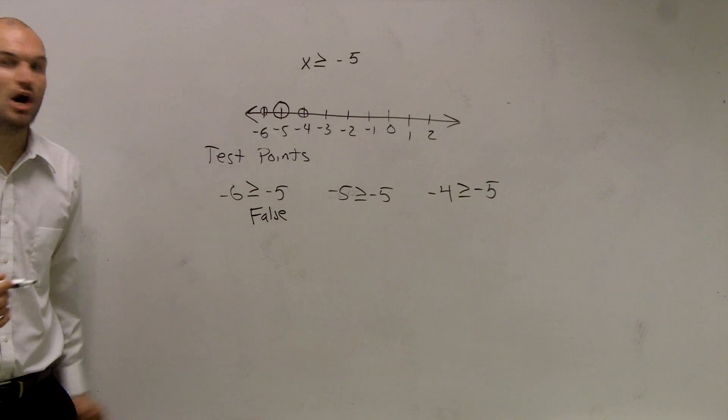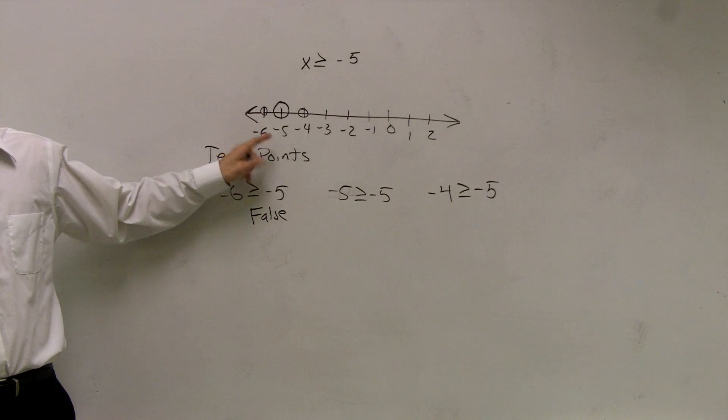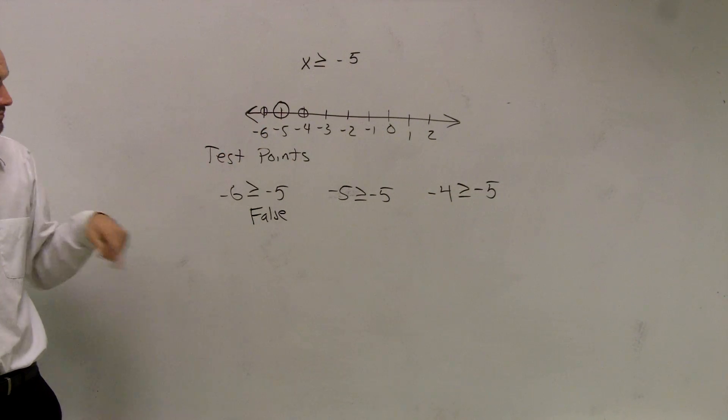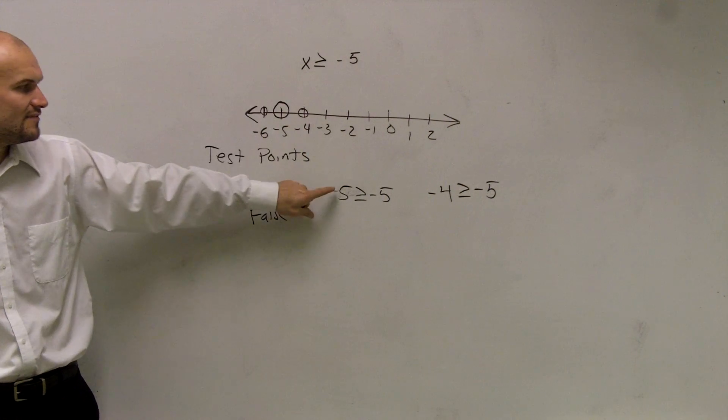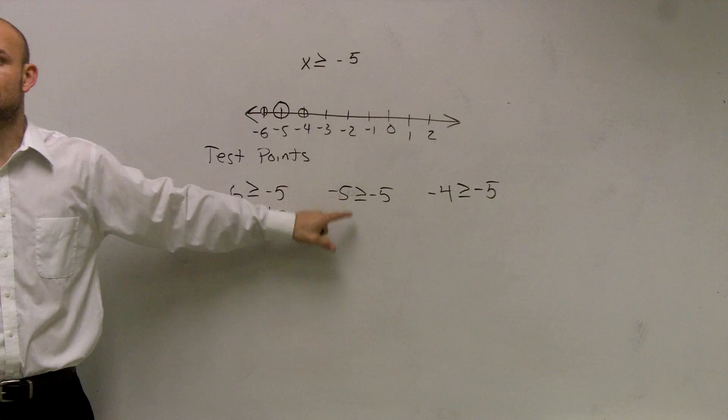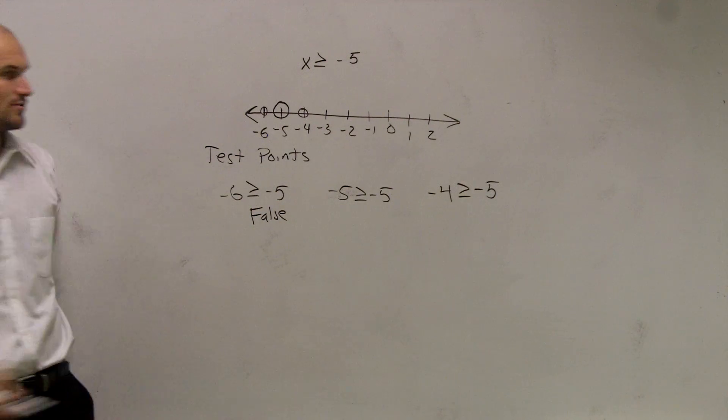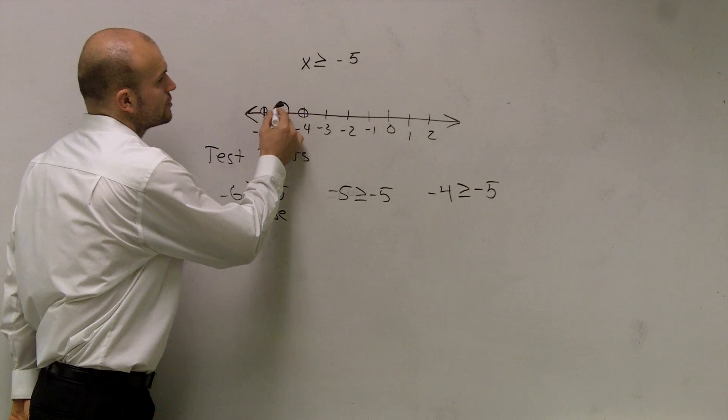And that is going to be false. Therefore, if it's false, we do not shade it in. Okay? We're going to leave it open. Then look over here. Negative 5 is greater than or equal to negative 5. Well, obviously it's equal to, right? So we're going to shade it in.